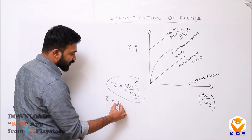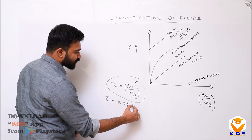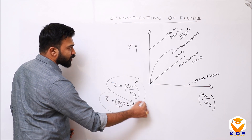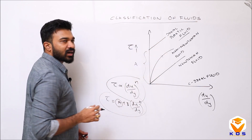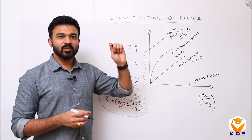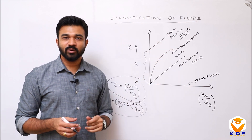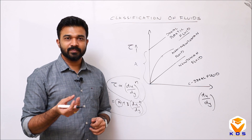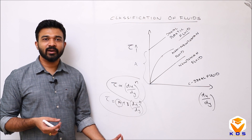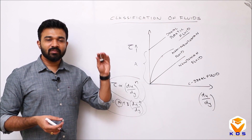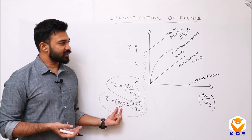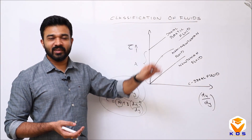If tau equals a plus b into du by dy raised to n, where some initial constant a is present, the flow starts only after a threshold — these are called plastic fluids. For example, mud or paste: if you place a paste somewhere, it does not flow immediately. As time proceeds, the extra parameter A means it needs a yield stress before flowing. This is the classification of fluids.